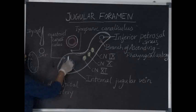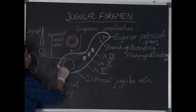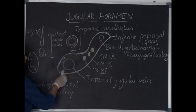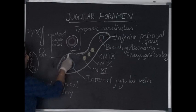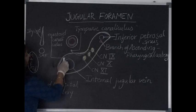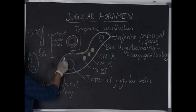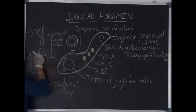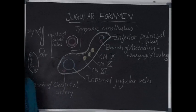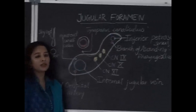And there is one more canaliculus which is present along the jugular foramen near the internal jugular vein. This is called jugular fossa and the name of this canaliculus is mastoid canaliculus. And the mastoid canaliculus runs laterally and opens between the tympanic part and the mastoid part.